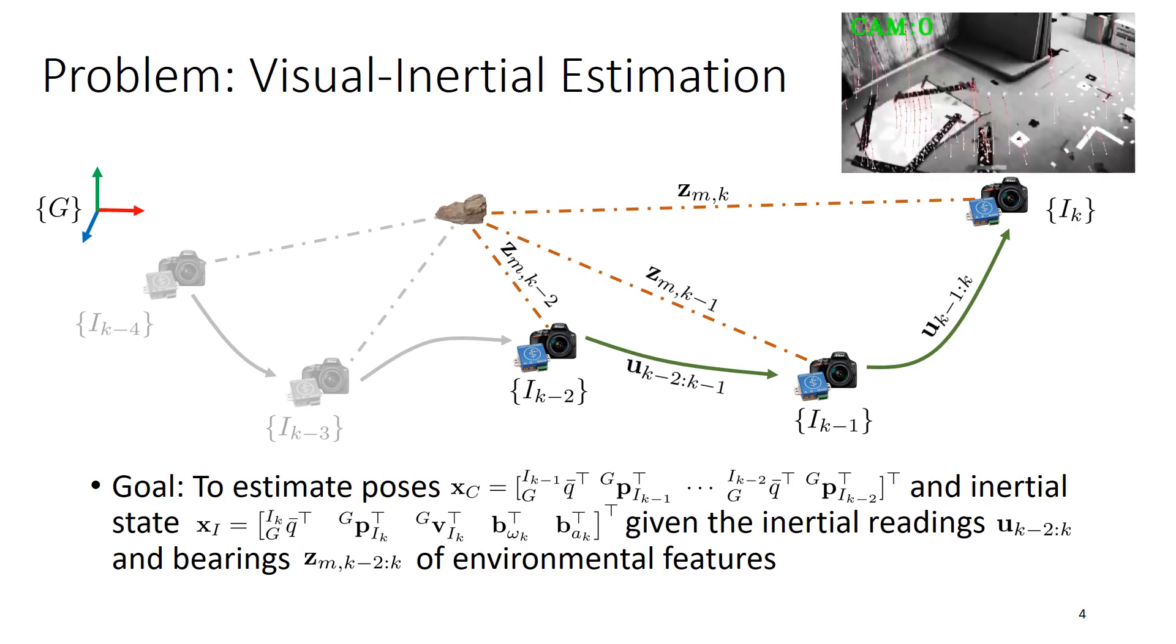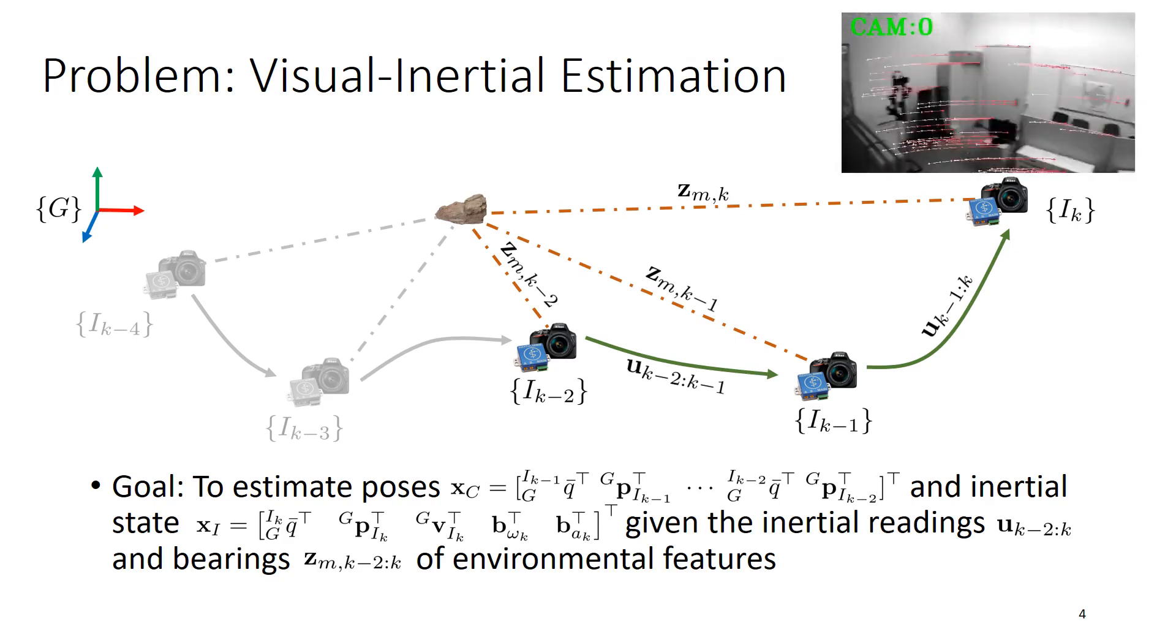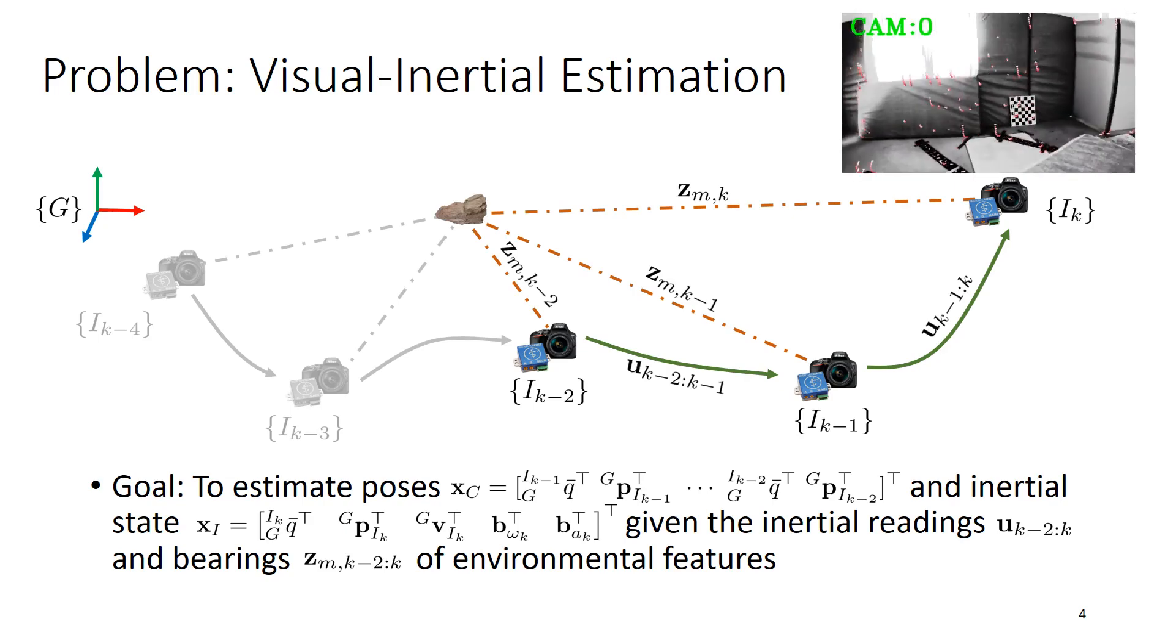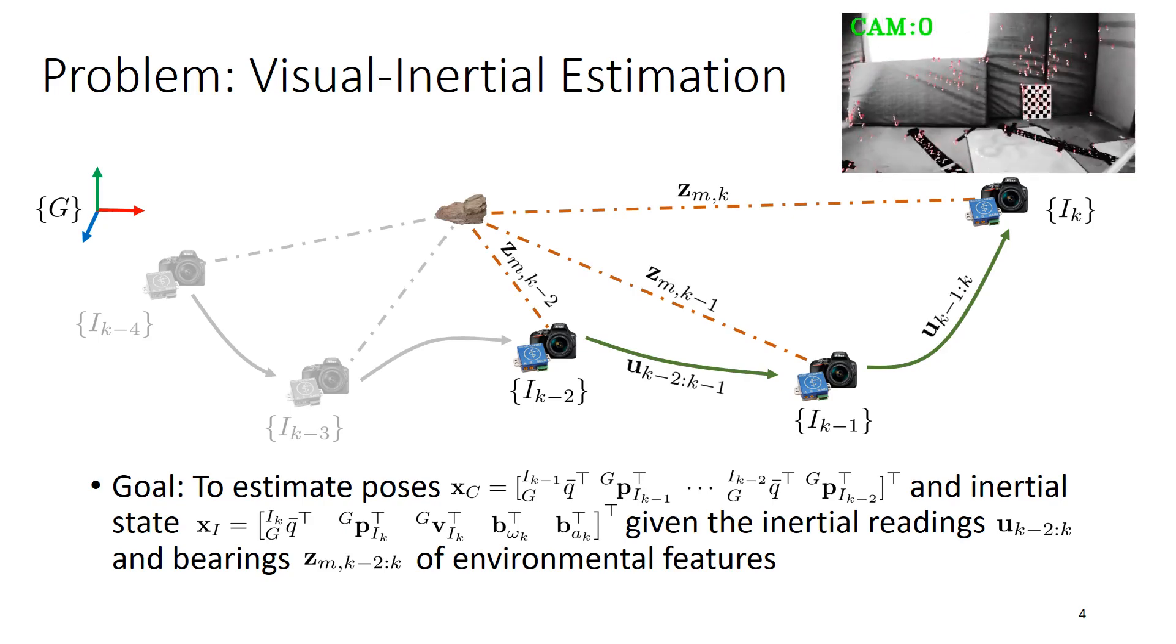In this case denoted as ZM, the goal is to estimate the historical poses, the orientation and position at each one of these time steps, along with an inertial state, given these inertial readings and bearings of the environmental features.